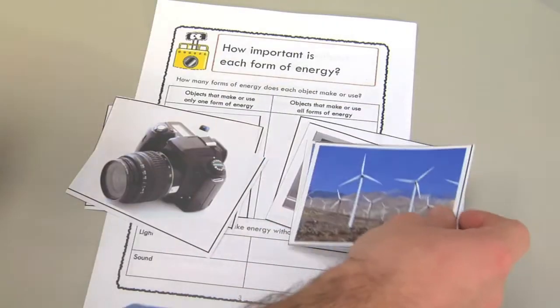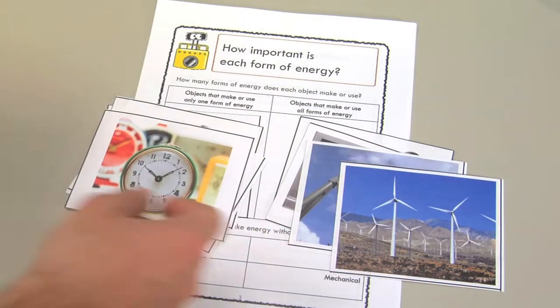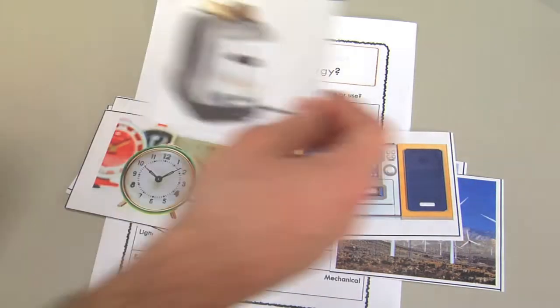Now use picture cards to separate objects that use or produce one form of energy from those that use or produce many.